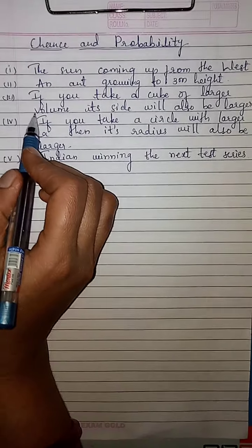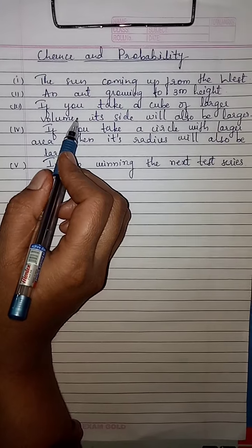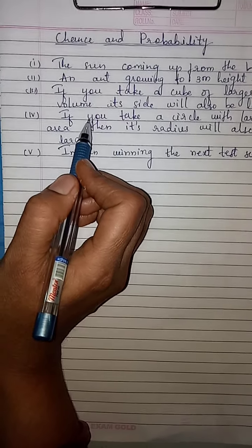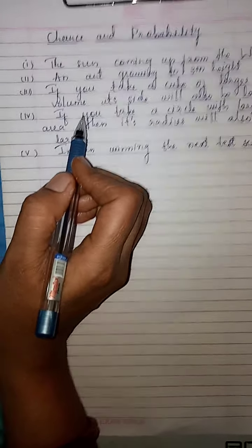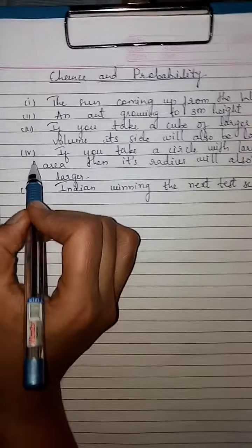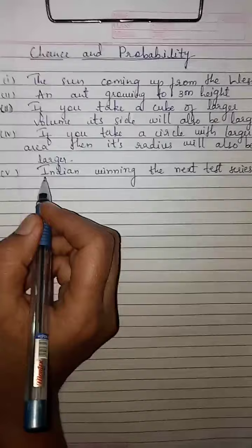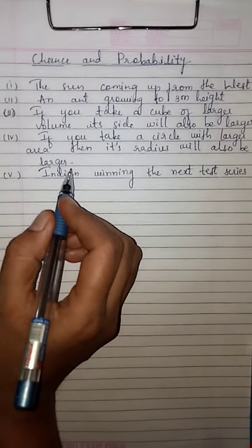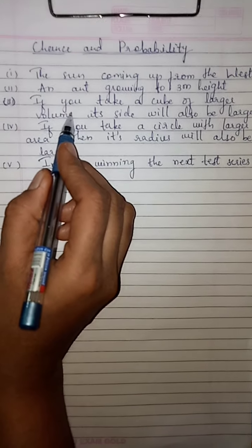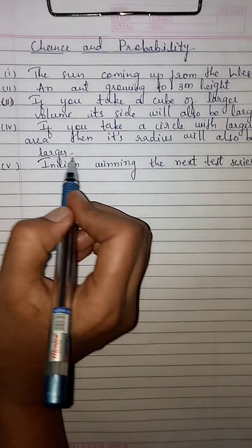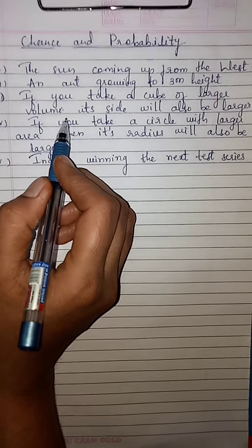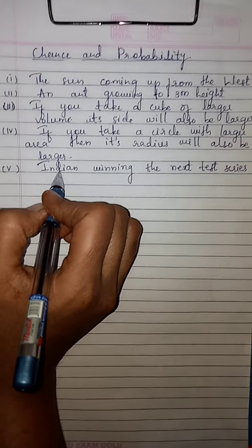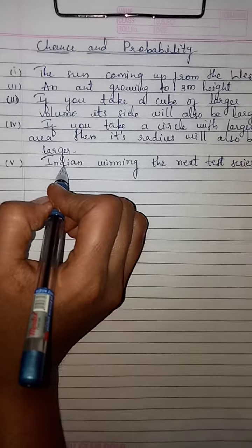Third statement: if you take a cube of larger volume, its side will also be larger. Fourth statement: if you take a circle with larger area, its radius will also be larger. For both the third and fourth statements, it is certain that a larger area circle will have a larger radius, and a larger volume cube will have a larger side. Fifth statement: India winning the next test series — here both winning and losing are possible.